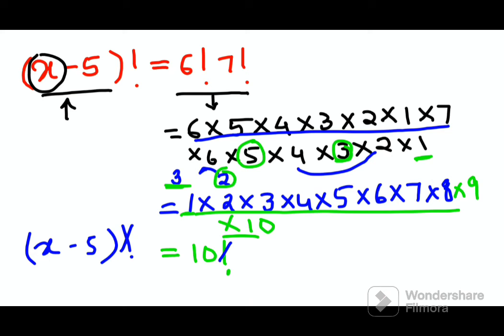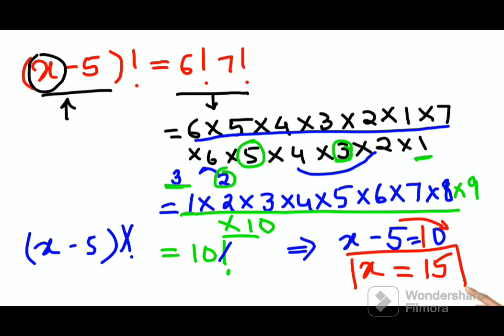So now I can cancel the factorials and now my entire question has become very easy. We have x minus 5 equals to 10. Therefore I can say the value of x is, sorry there was 10 over here, the value of x is 10 plus 5. This 5 shifts on this side. So 10 plus 5, the value of x is nothing but just 15.